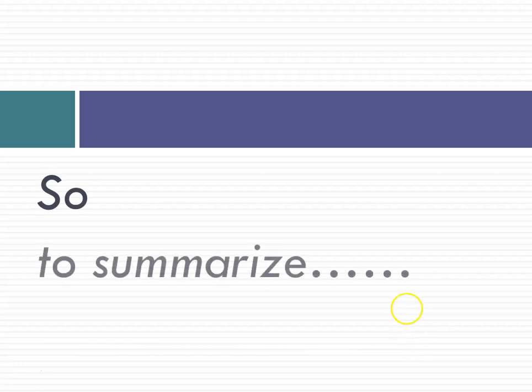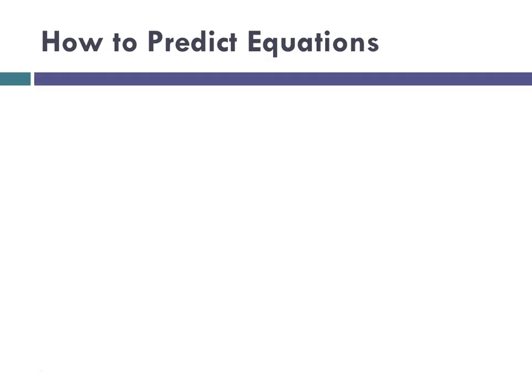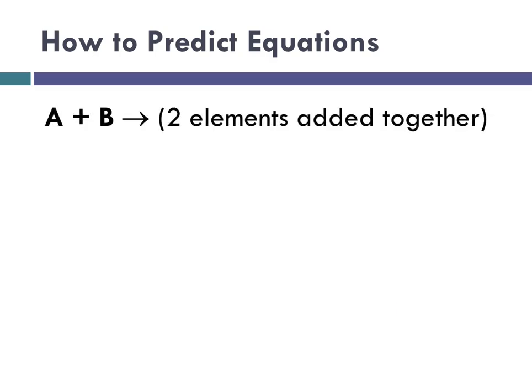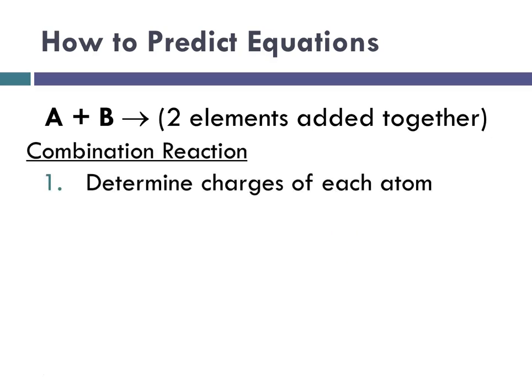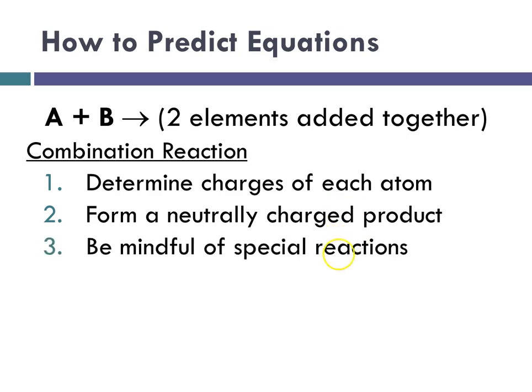So to summarize, when predicting synthesis, it's going to be two elements, typically combining to form one product. So the way you can tell that it is typically a synthesis is that there's one product only. It's a combination. You're going to determine charges if it's a metal with a nonmetal. You're going to form a neutrally charged product in that case. You're going to be mindful of the special reactions, and you're going to balance the equation.